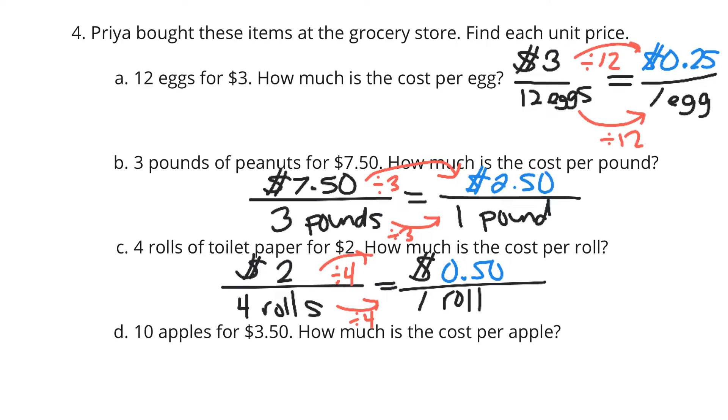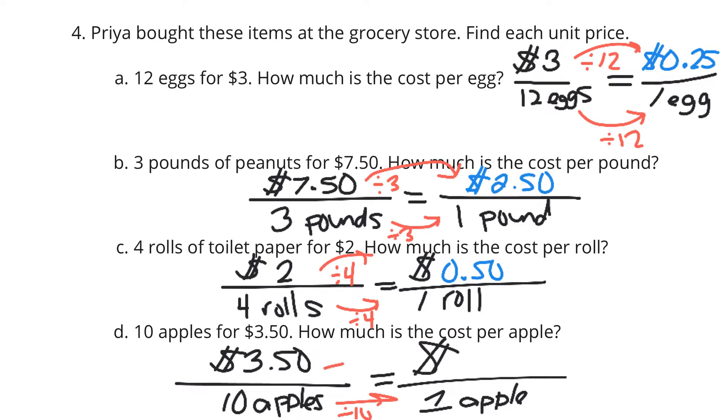And lastly, in this question, 10 apples for $3.50, how much is the cost per apple? So our cost of $3.50 for 10 apples, what is my cost per 1 apple? Well, once again, dividing by 10 here. And so if I take my $3.50 and divide it by 10, it's $0.35 per apple.